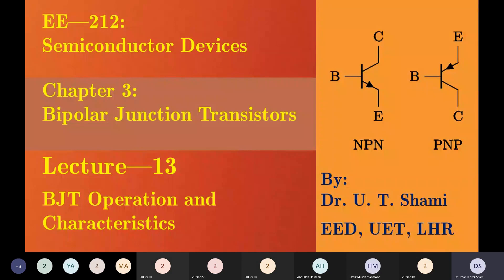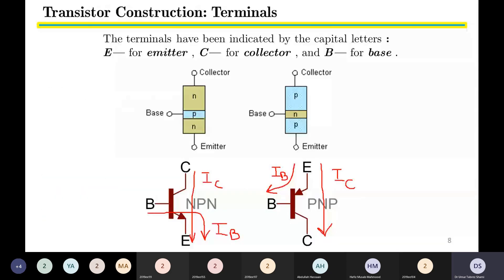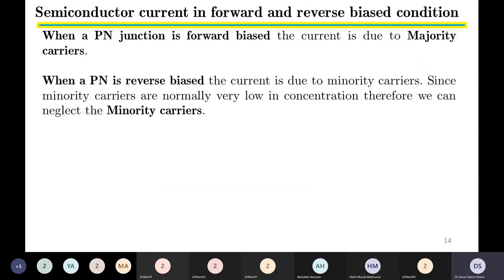Bismillahirrahmanirrahim. This is the 13th lecture, and today we will continue with our previous lecture on bipolar junction transistors. Last time we had an introduction to the BJT and saw the physical construction. This time we will study the operation of the BJT, and if time allows, the characteristics also. We will start with slide number 14, which is a revision of the PN junction.